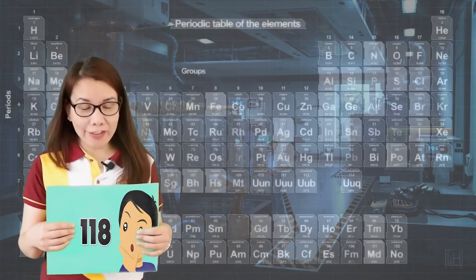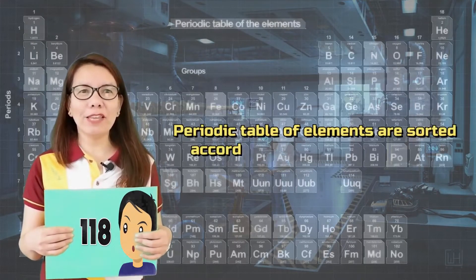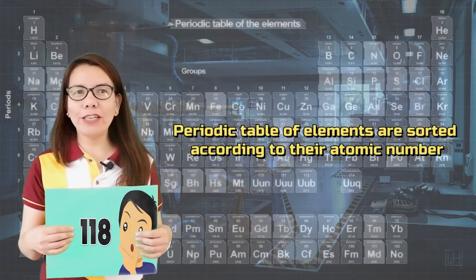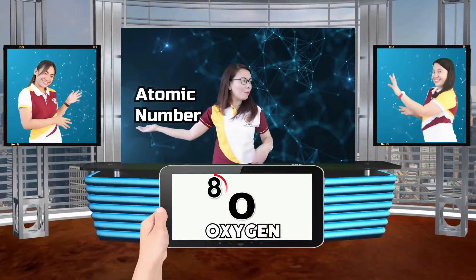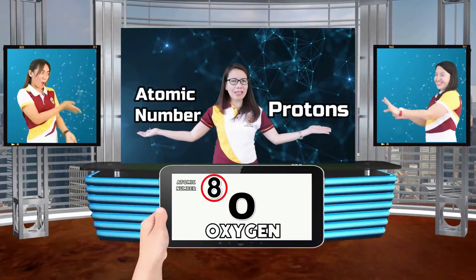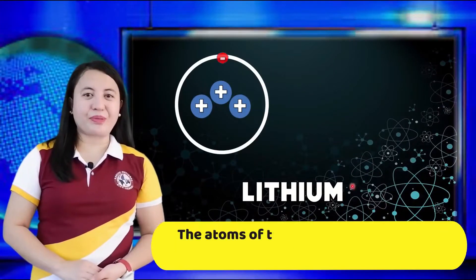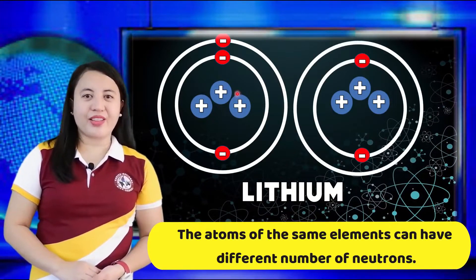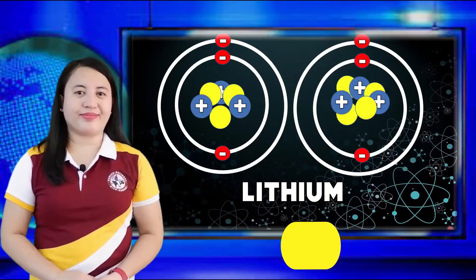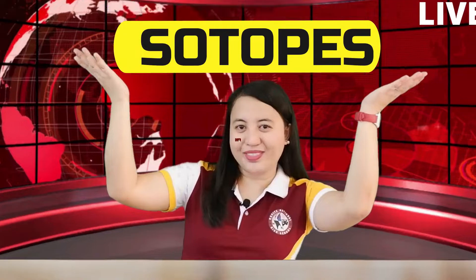Did you know that there are 118 recognized elements in the periodic table, which are sorted according to their atomic number? The atomic number is equal to the number of protons the atom has, which defines what an atom is. The atoms of the same element can have different numbers of neutrons, and that is what we call isotopes.